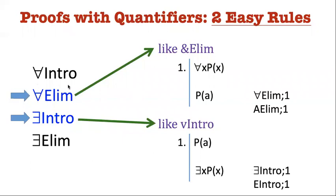Anytime you have a universal premise, life is easy. You just eliminate it. And anytime you're trying to prove an existential, life is easy. You just introduce it. So don't think that quantifier proofs are always difficult. Sometimes they don't even require sub proofs. And here's the analogy.